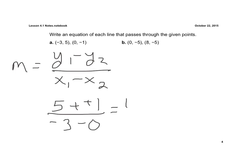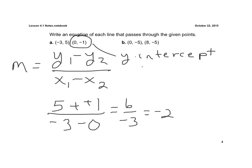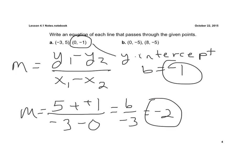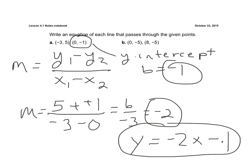Keep, change, change. That gives us a positive 6 over a negative 3, which equals a negative 2. And again, this point right here is our y-intercept because it has an x value of 0. So that means our b is equal to negative 1. These are the two things we need to know — our m and our b. So my equation is y equals negative 2 times x minus 1. And there's the answer for letter a.